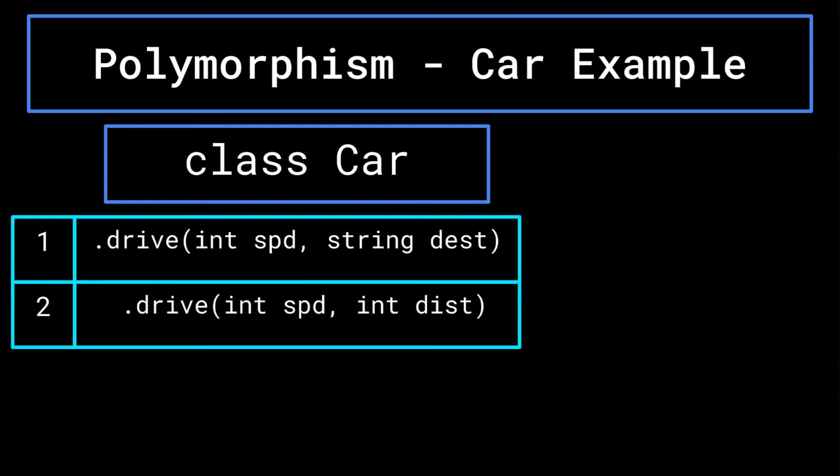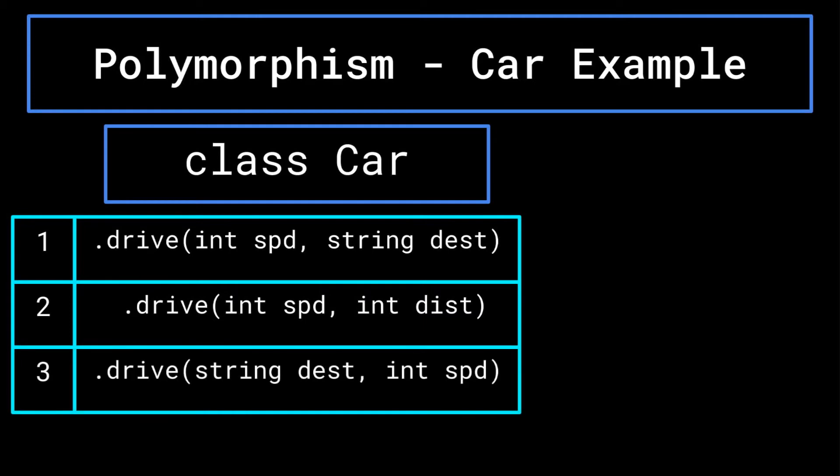For drive method two, we will set its argument to accept two integers, for instance distance and speed. Finally, in drive method three, we will have it accept a string first for its destination, and then an integer for speed. This differs from drive method one, in that drive method one's parameters are in reverse order compared to drive method three.